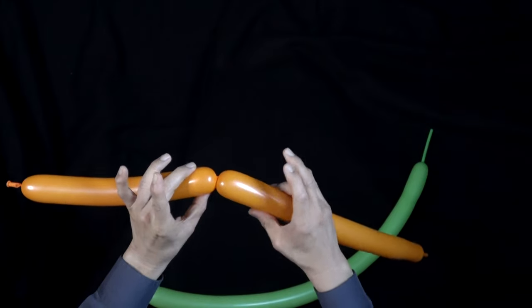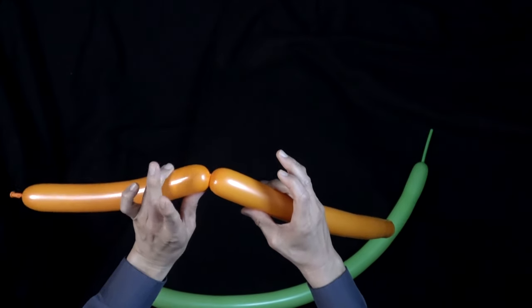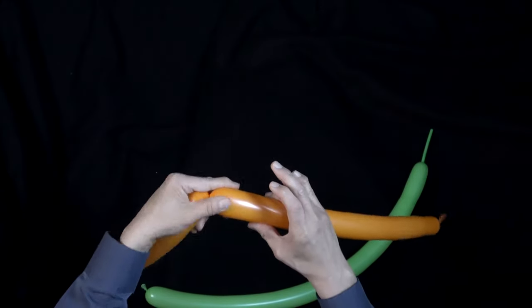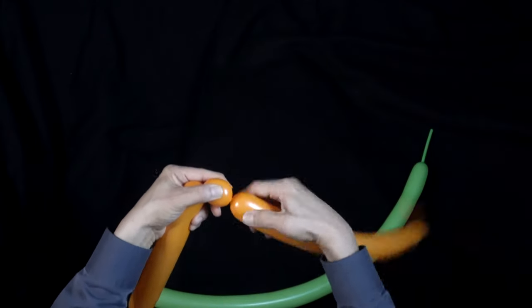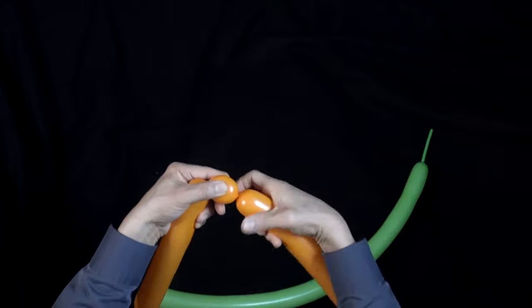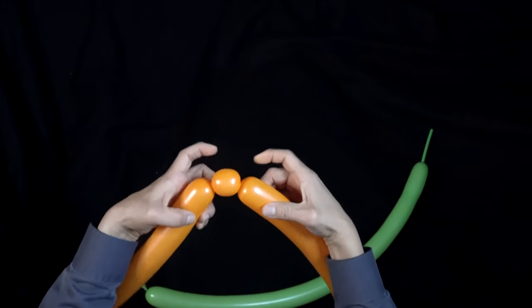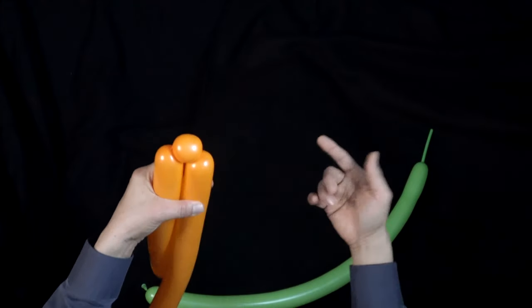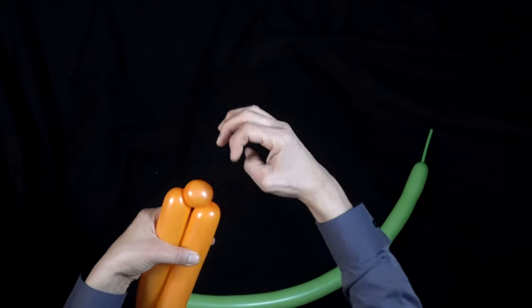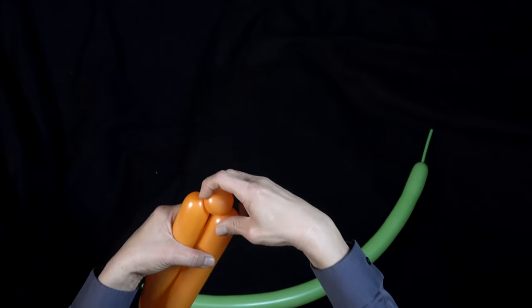Now we're going to make a pinch twist here. Notice how I'm holding with the left hand, otherwise it would come undone. Now make a small basic twist. Remember to always pinch and then twist, makes it a lot easier. Now fold. This is going to turn into a pinch twist, so you're going to pull this and then twist it.